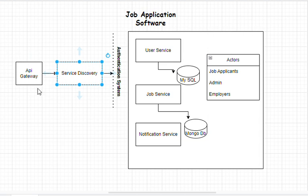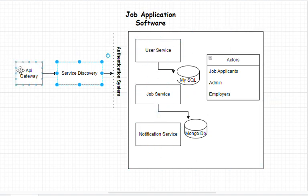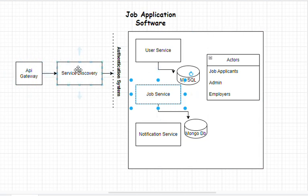The API gateway and service discovery will be in charge of routing requests and traffic to the appropriate instance of any of the services required. If you are trying to call the user service, you go through the API gateway and have access to it. The same way, if you need to call the job service, it goes through the API gateway and so on.